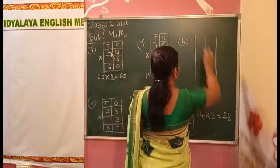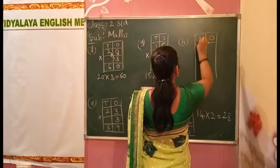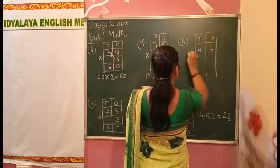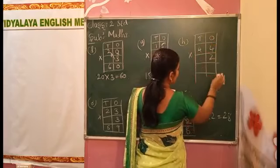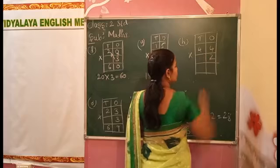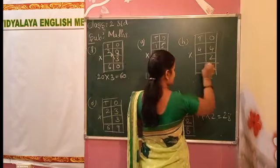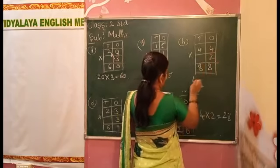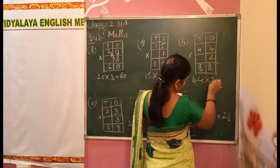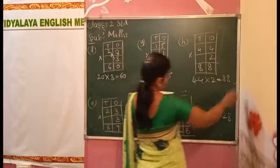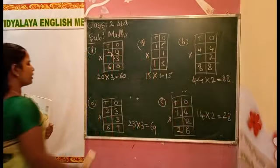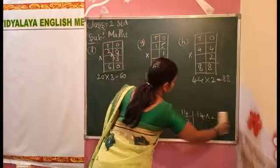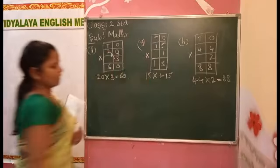Next, ones tens. Forty-four into two. See here, two fours are eight. Forty-four into two equal to eighty-eight.